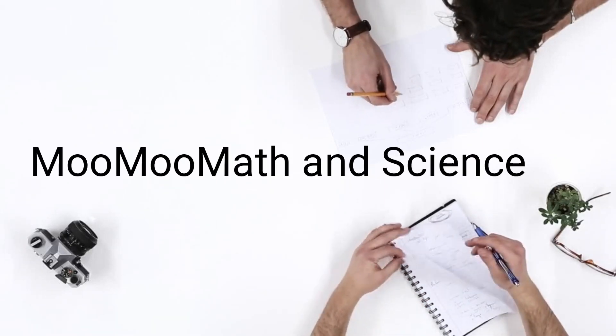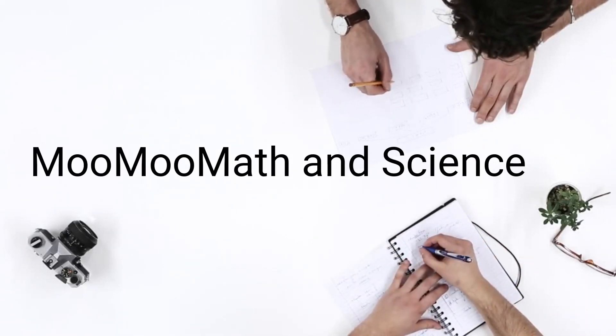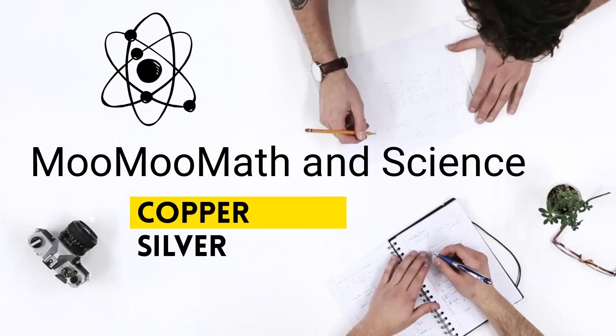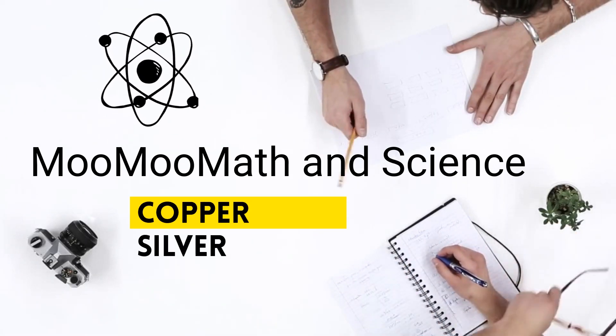Welcome to Moo Moo Math and Science. In this video I would like to show the electron configuration of copper and silver. They are both exceptions to the diagonal rule.